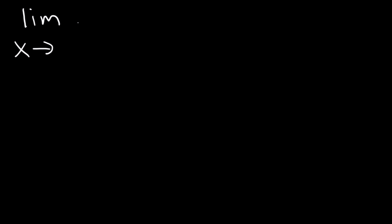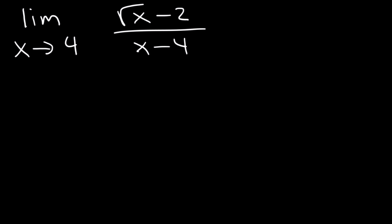What is the limit as x approaches 4 of square root of x minus 2 over x minus 4? What should you do under these circumstances? We can't factor this expression, so how can we simplify? If we plug in 4, then 4 minus 4 is 0, so the function will be undefined. We can't use direct substitution — we don't want a 0 in the denominator.